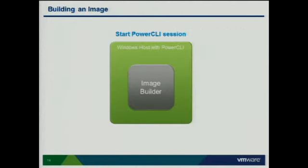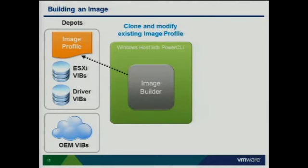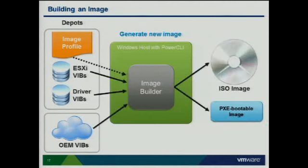To build images, we use a Windows host with PowerCLI. We start the session, connect to vCenter, and look at software depots. The software depot is what we pull down for the base image, at which point we can clone, customize, or create new images from it. We connect to the image profile and can include or remove VIBs, drivers, third-party application software, and OEM VIBs. The output is either a PXE-bootable image or an ISO image.